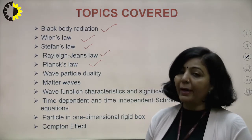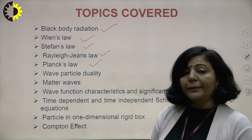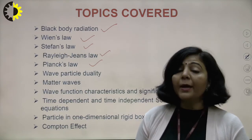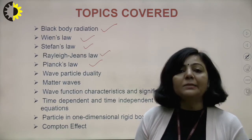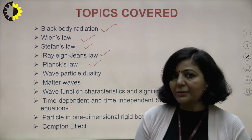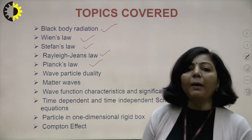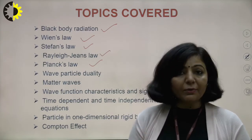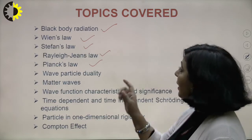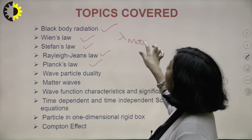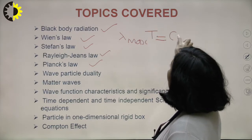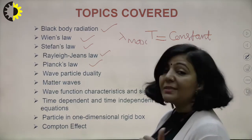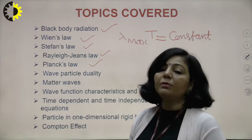Two important conclusions were drawn from the black body radiation spectrum. First, at every temperature T, there is a wavelength lambda-max at which maximum intensity is obtained. With increasing temperature from T1 to T2, lambda-max shifts towards shorter wavelengths. According to Wien's displacement law, lambda-max is inversely proportional to temperature, and the product lambda-max times T equals a constant b, known as Wien's constant.